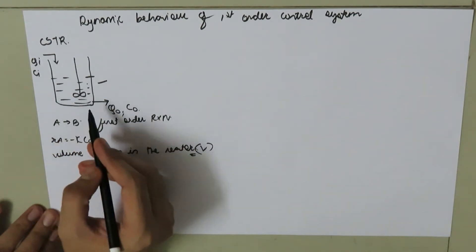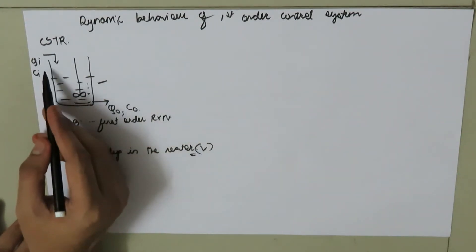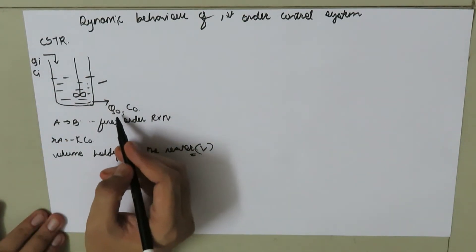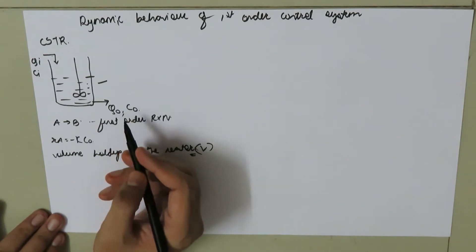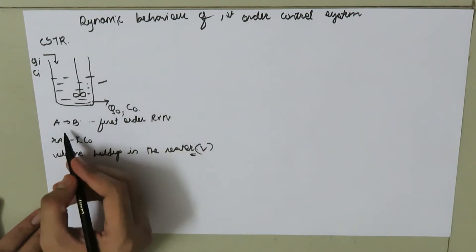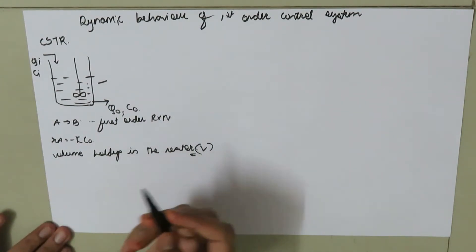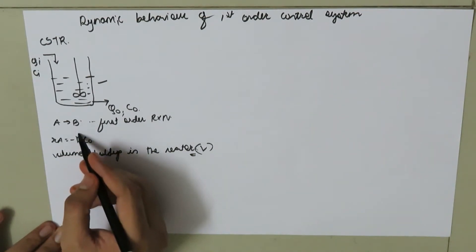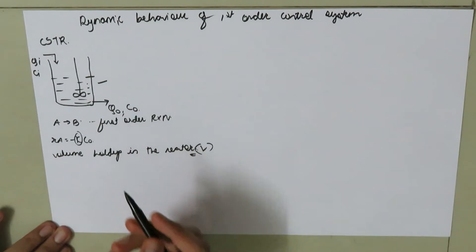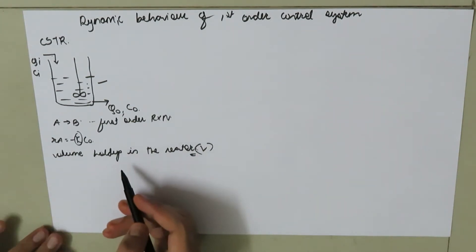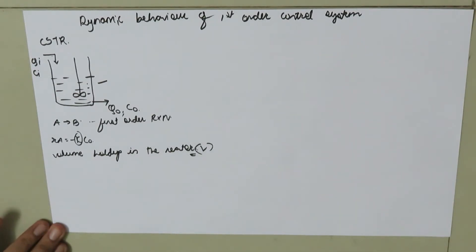Consider a continuous stirred tank reactor with inlet volumetric flow rate QI and concentration CI, and outlet volumetric flow rate QO and concentration CO. The reaction taking place in this CSTR is A gives B, which is a first order reaction with RA equal to negative K times CO, where K is the rate constant. Let V be the volume holdup in the reactor.